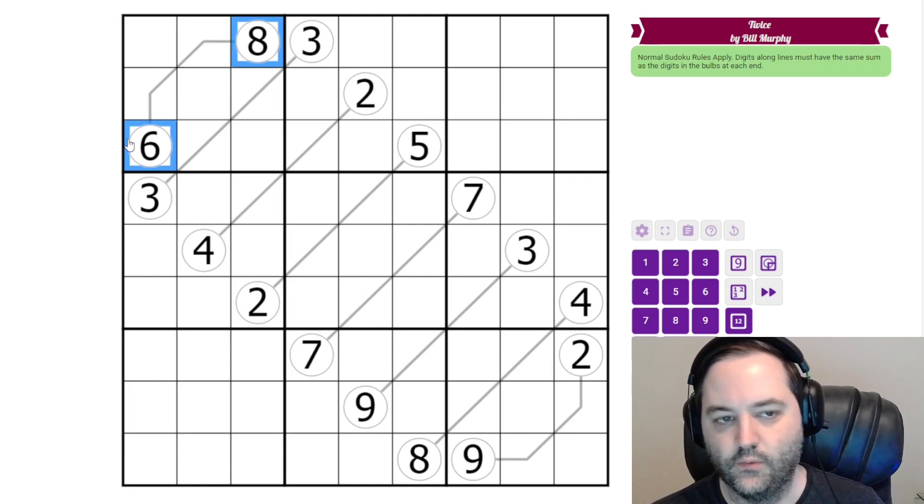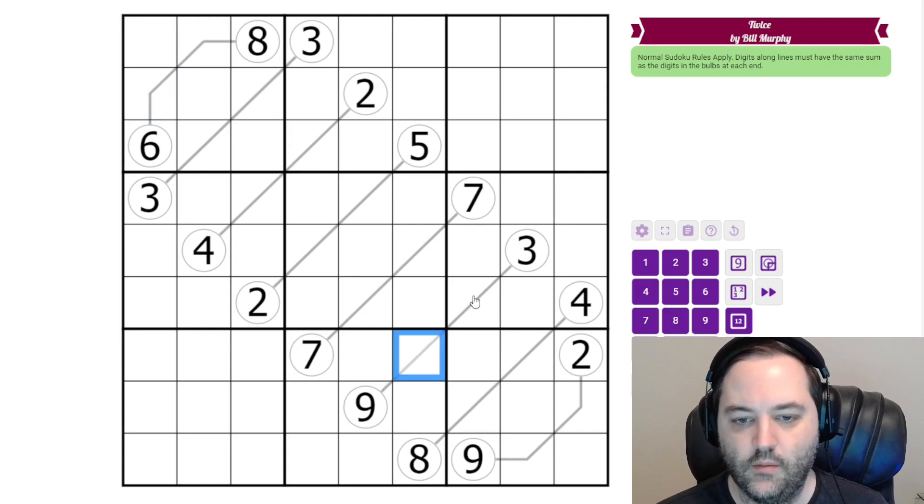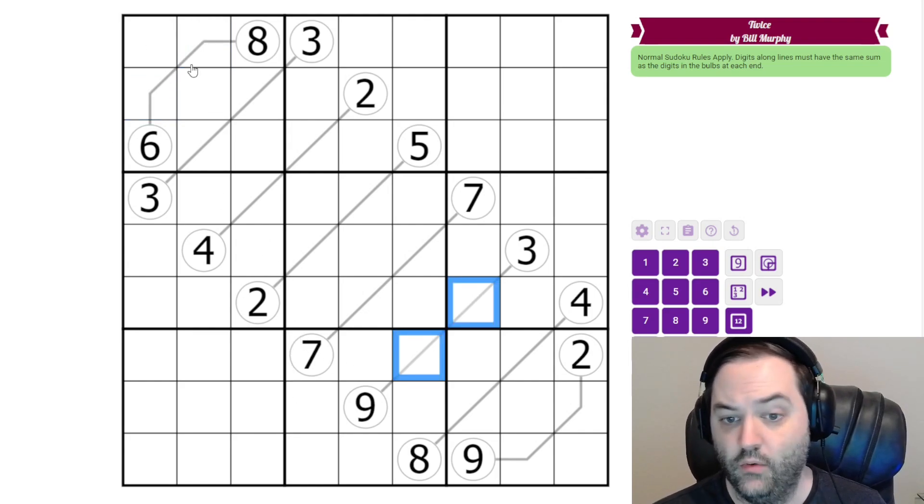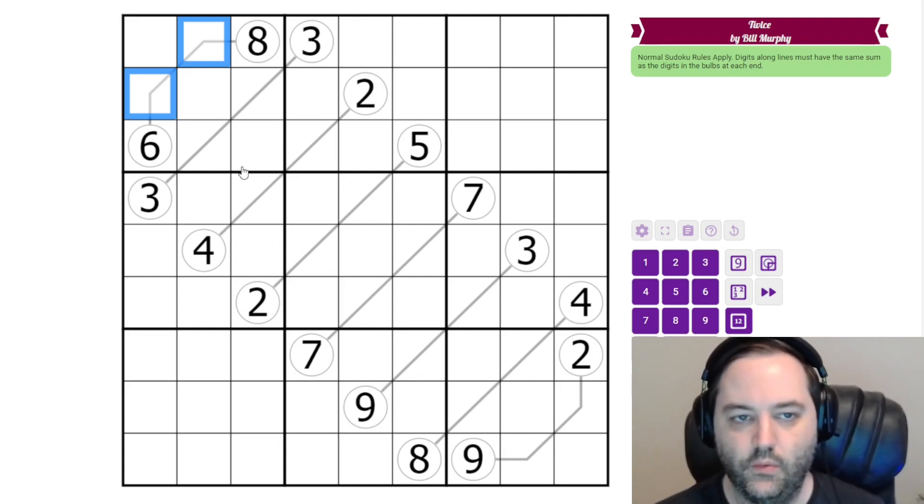Eight and six is fourteen. There are only two ways to make fourteen in two cells when the digits can see each other. That's gonna be important to keep in mind. Some of these don't see each other so we can repeat digits in those cases. But here these two cells are in the same box. They can't repeat. We can't use six eight because we've already got that in the box so we have to use five nine.